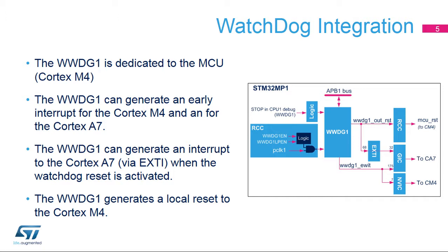The WWDG1 reset output is connected to the RCC and generates a reset of the Cortex-M4 only. In addition, this reset output is connected to the EXTI in order to activate the Cortex-A7 when a window watchdog reset occurs. This feature allows the Cortex-A7 to restart the Cortex-M4 properly if needed.